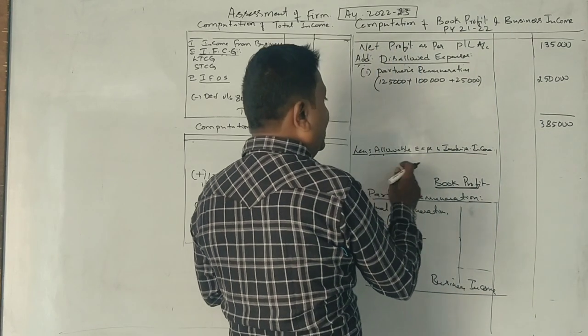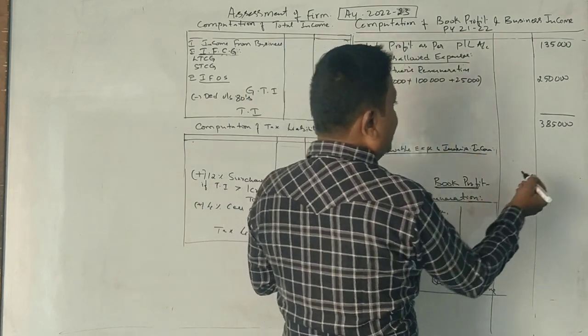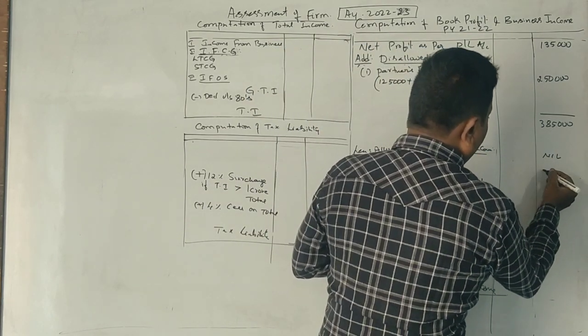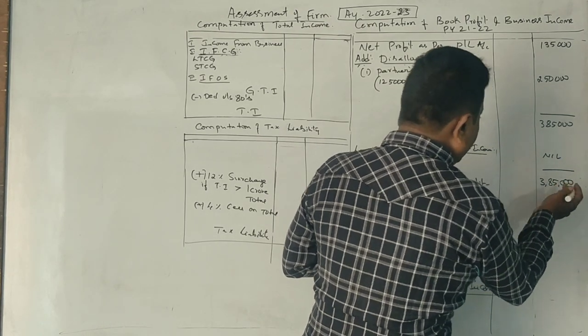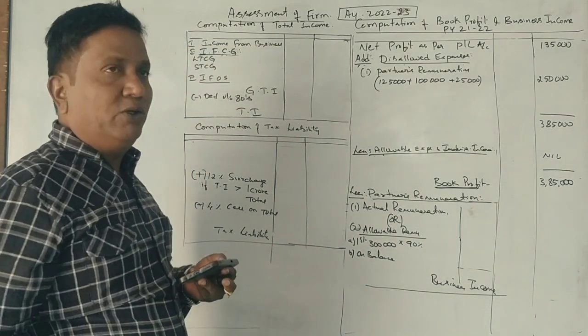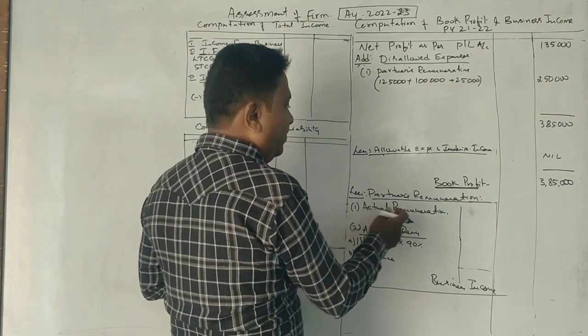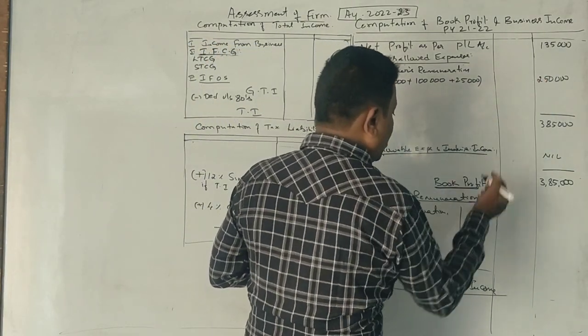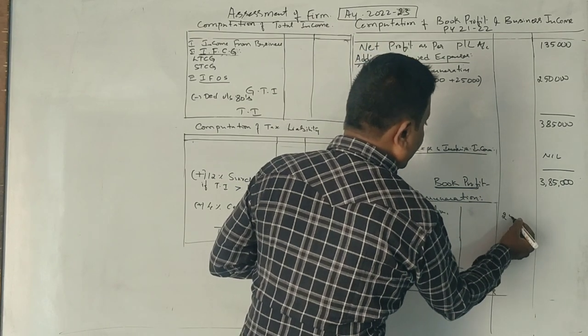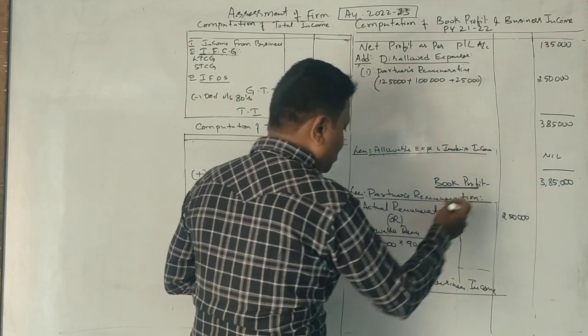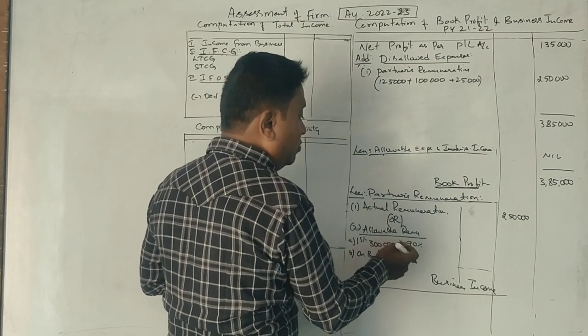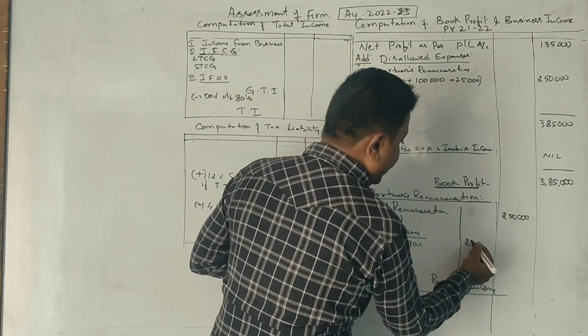If you have allowable and inadmissible income, the total actual remuneration is Rs. 3,85,000. Since book profit is 3 lakhs, the first calculation: actual remuneration is Rs. 2,50,000. First limit from book profit of 3 lakhs is Rs. 90,000.